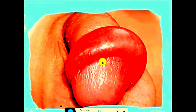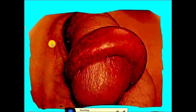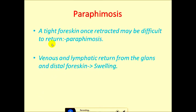The next topic is paraphimosis. If you forcefully retract the foreskin in a patient with a tight prepuce, it can lead to paraphimosis — this is the retracted prepuce with edema. Paraphimosis is a tight foreskin that has been retracted and is difficult to return. When performing procedures you must retract and then replace the prepuce; failure to do so is a common cause of paraphimosis.